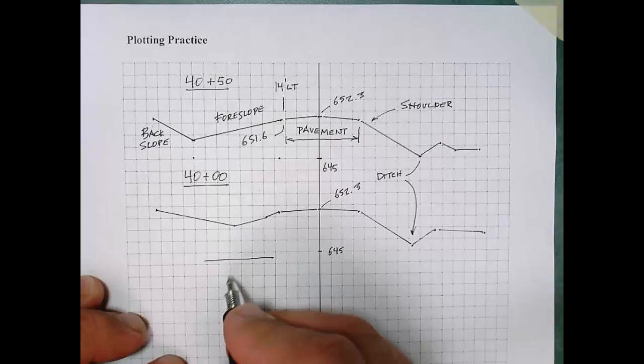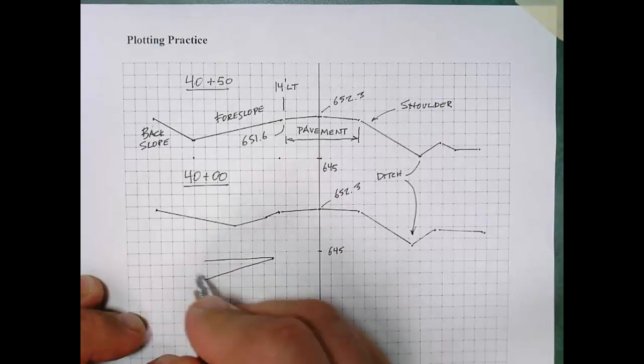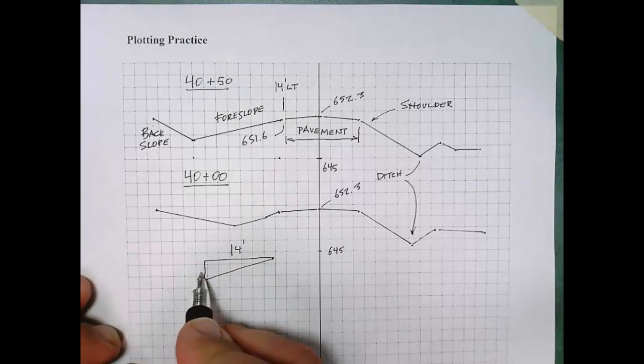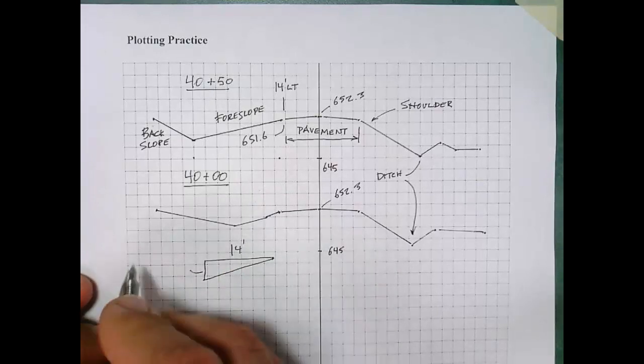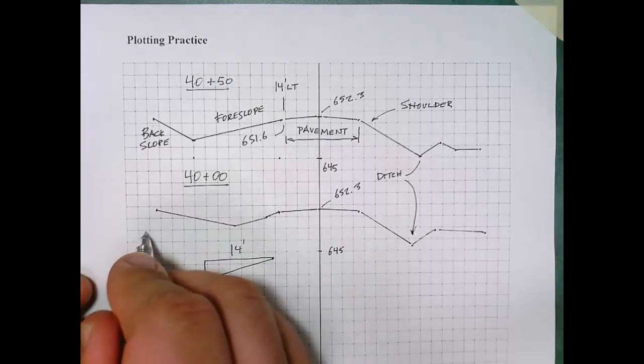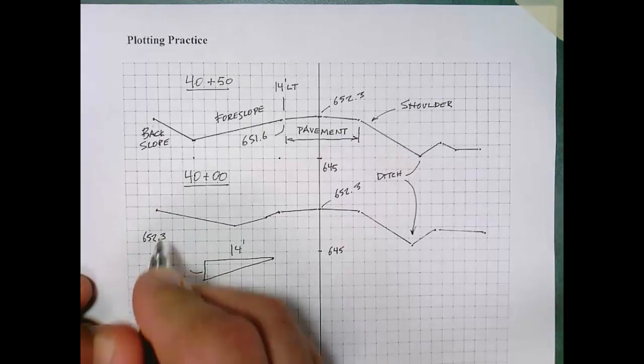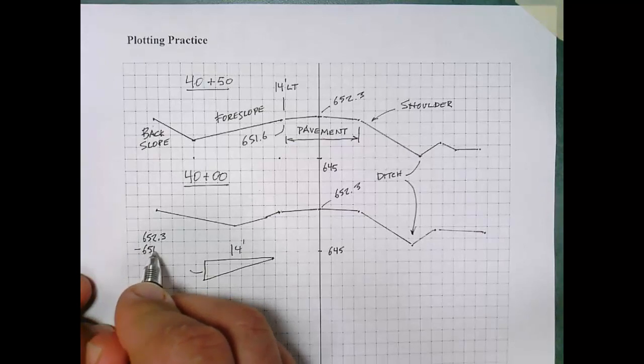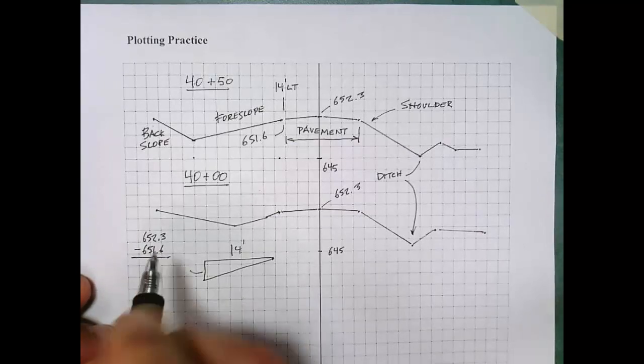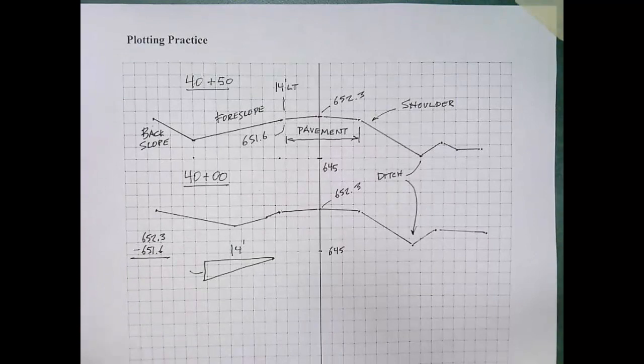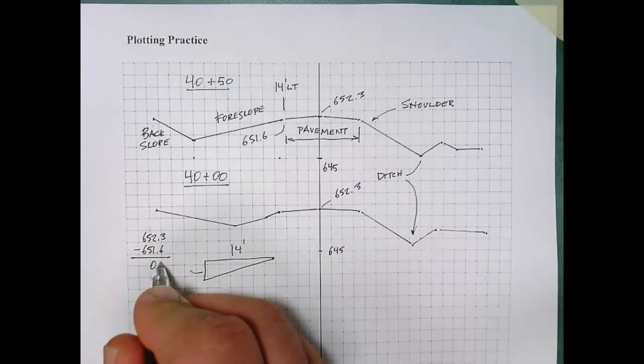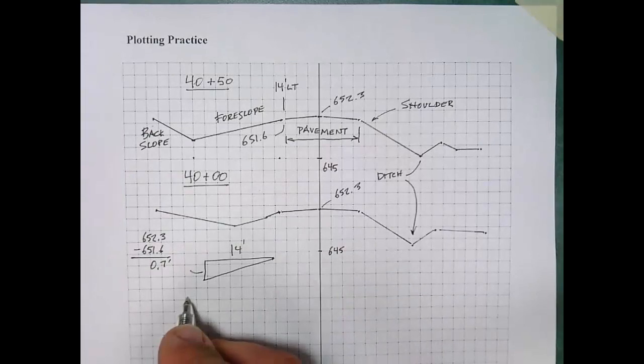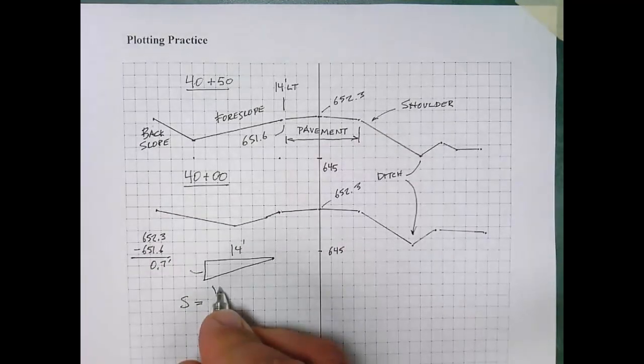Well, to calculate the slope here, all we need to do is know the horizontal distance and the vertical distance, or the run and the rise. Well, the rise here, or the vertical distance, is simply the difference in the elevations from which we plotted the cross section. So, here you can see 652.3 minus 651.6 is a difference of 0.7 feet.